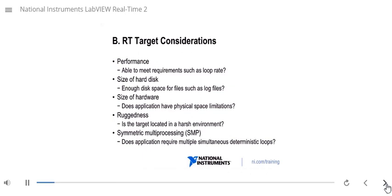When you're trying to decide what RT target to use, what hardware that you need to run your application on, there's a number of considerations that you'll need to take into account. One of the top most amongst these is performance. Can you meet your requirements, such as the loop rate? Can you acquire enough data fast enough? Similarly, the size of hard disk. Okay, you've acquired that data. You have enough places on disk to put it.